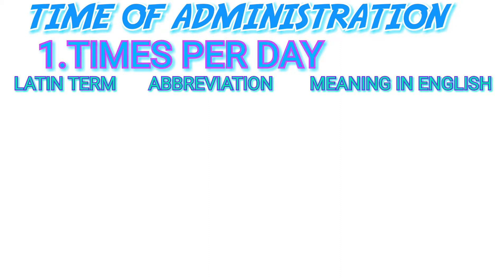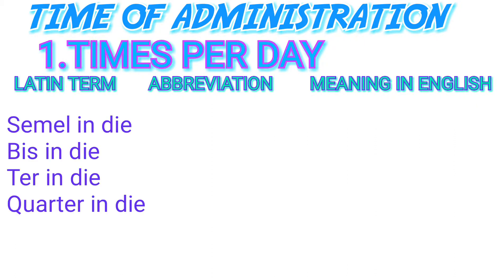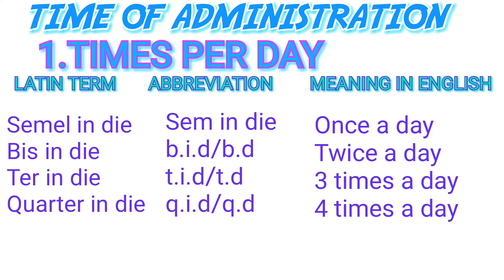The first subcategory is times per day. The first Latin word is 'semel in die,' abbreviated as SID, meaning once a day. The next term is 'bis in die,' abbreviated as BID or BD, meaning twice a day. These abbreviated terms are generally written by the doctor in the prescription.